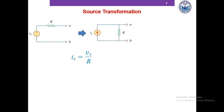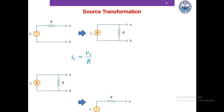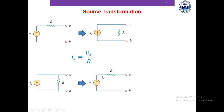The opposite transformation is also possible. A current source with a resistor R in parallel can be replaced with a voltage source Vs in series with the same resistor R. We need to determine the value of Vs to replace the current source, and Vs is equal to Is times R.